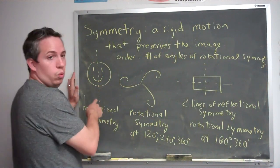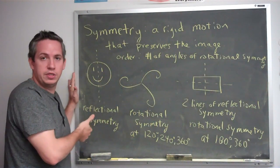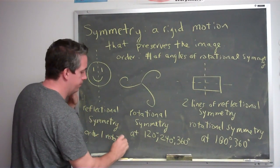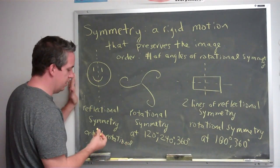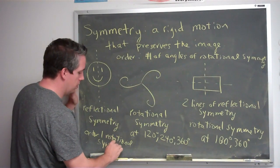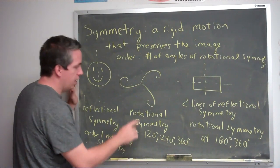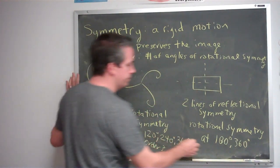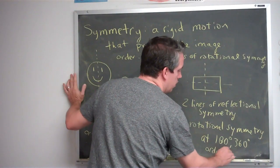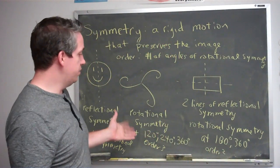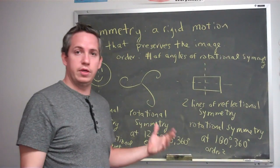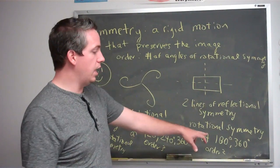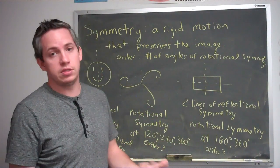For example, the smiley face has order 1 — only 360 degrees — which is another way of saying it has no rotational symmetry. The pinwheel shape has order 3, and the rectangle has order 2. So you can describe symmetry either way: if something has rotational symmetry at 120, 240, and 360 degrees, I could also say it has rotational symmetry order 3. If it has 180 and 360, that's order 2. If it has no rotational symmetry, that's order 1.